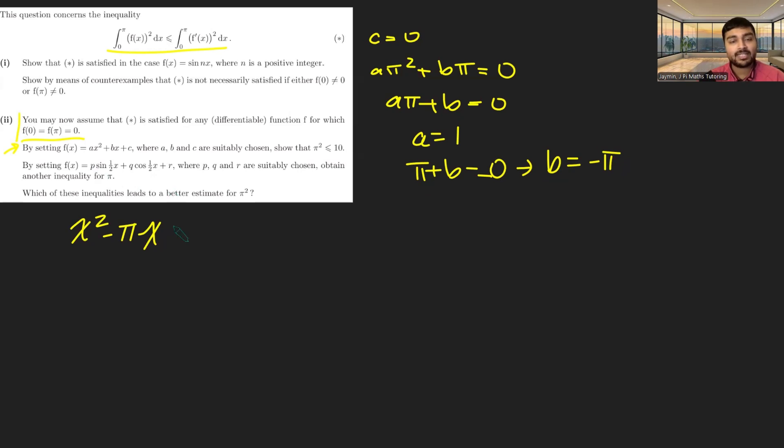And so this function that I want is x² - πx. So this is a function that satisfies f(x) = 0 when x is zero or pi. And so therefore, it must satisfy this inequality according to our assumption. So the integral from 0 to π of (x² - πx)² dx must be less than or equal to the integral from 0 to π of the derivative of this, which would be (2x - π)² dx.